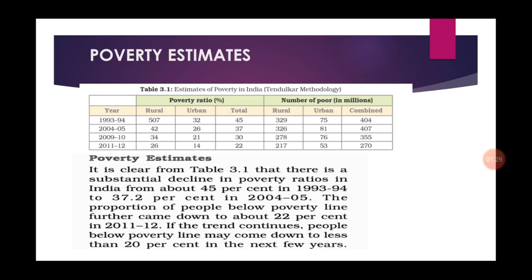The poverty line indicates the level of purchasing power required to satisfy the minimum needs of a person. The group of people fulfilling the minimum requirements of purchasing power are regarded as living above the poverty line - APL - and are not regarded as poor. The other group without minimum purchasing power are considered as living below the poverty line - BPL.